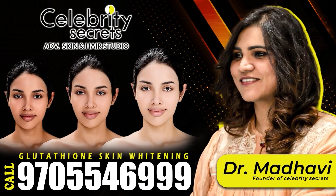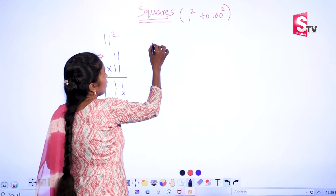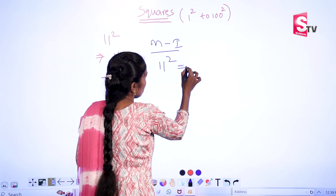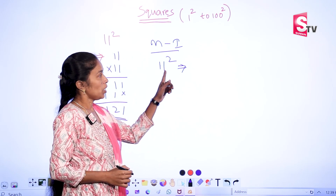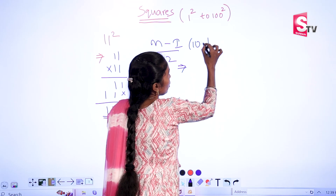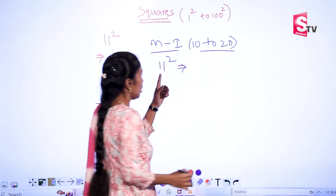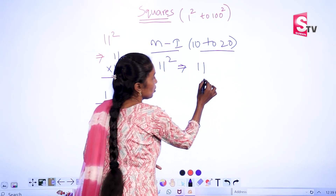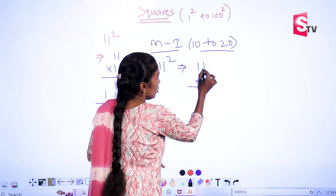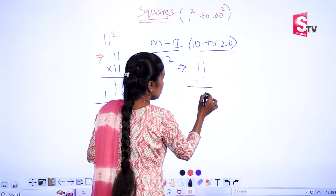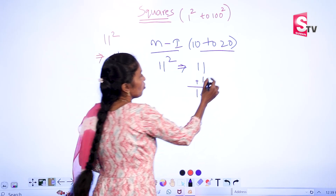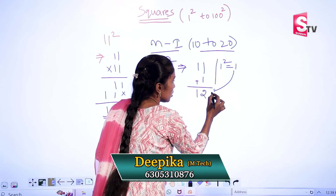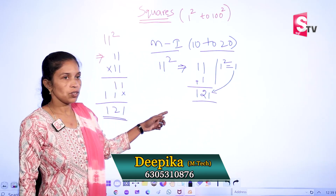In Method 1, for 11 square, we use a base of 10. From 10 to 20, the base is 10. We have 11 square — write down 11 as it is, and we have an extra 1 here. So write down that 1. Extra 1, so 1 plus 1 is 2. Write down this 2, and then 1 square — write down 1 as it is. So the value is 121. This is the shortcut method.